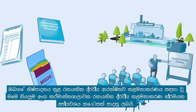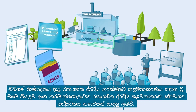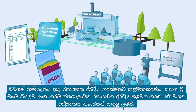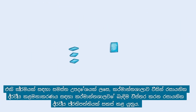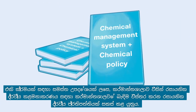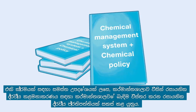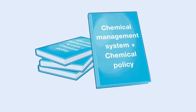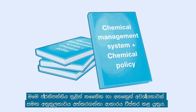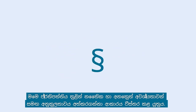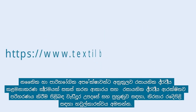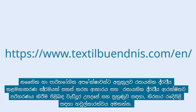All these elements for safely managing chemicals in your production form essential parts of the chemical management system of a factory. As an overall guidance for such a system, the factory should formulate a chemical policy that outlines the factory's commitment to chemical management. The policy should also specify how compliance with legal and other requirements is to be achieved. For further guidance and training on how to set up a chemical management system and safely handle chemicals in line with legal and customer expectations, contact the Partnership for Sustainable Textiles.